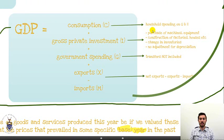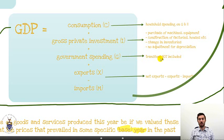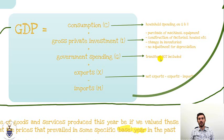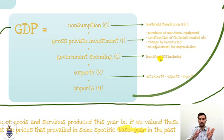Consumption is spending by households. Investment is essentially spending by firms — they buy machines and equipment, they construct factories, and they build up their inventories. Then of course we have government spending. Remember that transfers are not included in this figure because transfers are simply a transfer of value from one place to another.